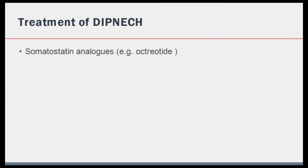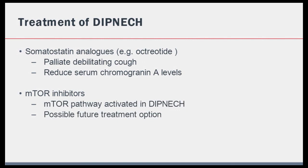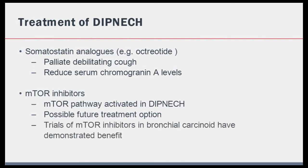What are the treatment options for DIPNECH? Somatostatin analogues have been prescribed in DIPNECH and have been shown to improve the debilitating cough patients report. These drugs have also been shown to reduce serum levels of chromogranin A. Potential future treatment options include possibly mTOR inhibitors, as it has been shown that the mTOR pathway is activated in DIPNECH, and trials of these drugs in bronchial carcinoid have demonstrated some benefit.